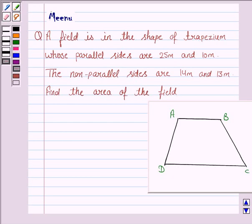Hello friends, let's discuss the following question. A field is in the shape of a trapezium whose parallel sides are 25 meters and 10 meters. The non-parallel sides are 14 meters and 13 meters. Find the area of the field.